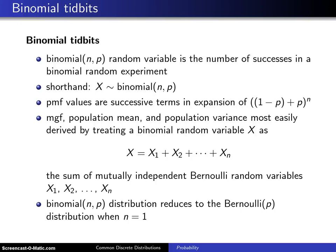Here are some tidbits about the binomial distribution. First of all, a binomial NP random variable is the number of successes in a binomial random experiment, as was defined earlier.